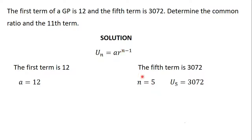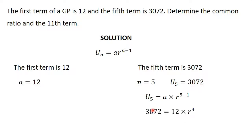Let's find u₅ from the formula. u₅ will be equal to a·rⁿ⁻¹, but n is 5, so u₅ will be equal to a·r⁵⁻¹. We know that u₅ is 3072, so we can replace u₅ with 3072. We also know a is equal to 12, so we have 12·r⁴, because 5 minus 1 gives us 4.